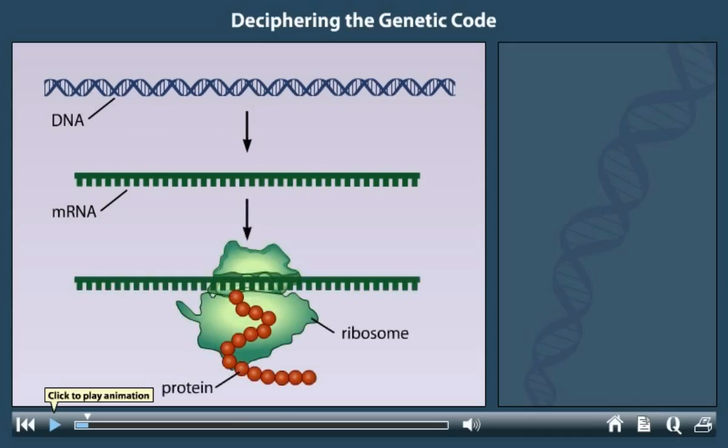In 1961, Marshall Nirenberg and Heinrich Matthaei published experiments that aimed at proving the RNA connection. The experiments also had the serendipitous effect of revealing clues about the genetic code.